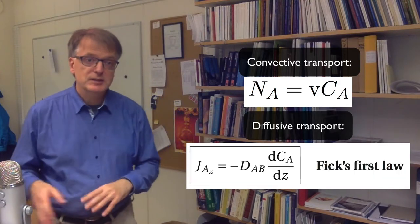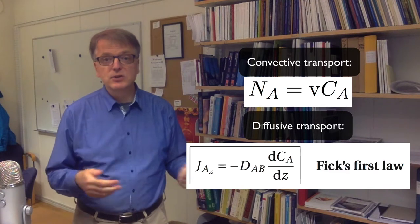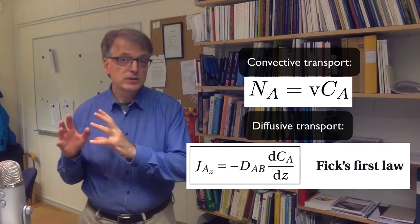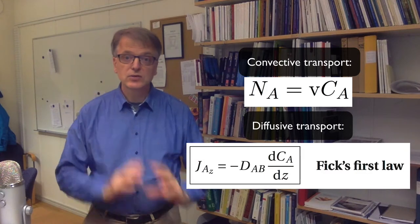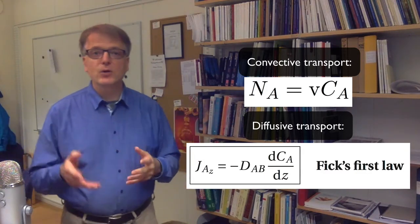If you have diffusive transport on the other hand, we can calculate that as a diffusivity times a concentration gradient, and since diffusion happens from high concentration to low concentration, you have to put a minus sign in front of that.